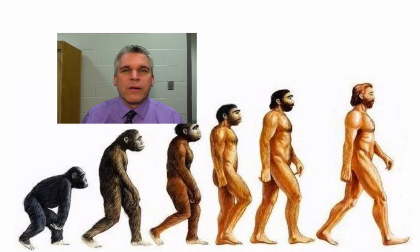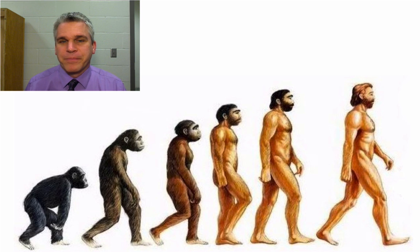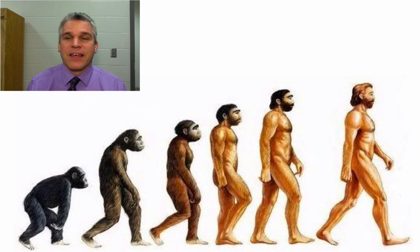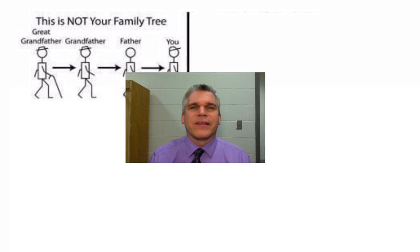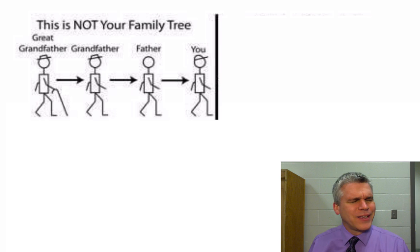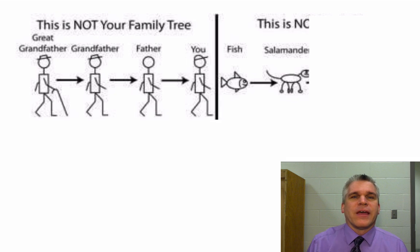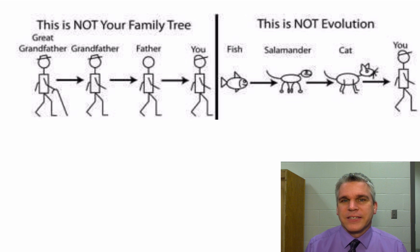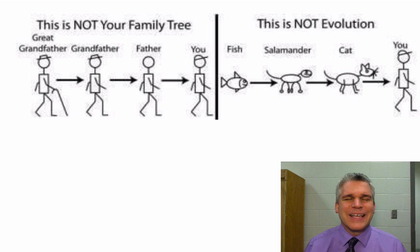Now why do we use these cladograms? You've probably seen a picture trying to show the evolution of humans as a linear progression — but what that picture really does is make us think that humans evolved from chimps, and that's not the case at all. That picture does not depict evolution correctly. Just like your great-grandfather did not evolve into your grandfather, who evolved into your father, who evolved into you — that doesn't make sense, and that's not how evolution works either. It's not that fish evolved into amphibians that evolved into mammals that eventually evolved into humans.